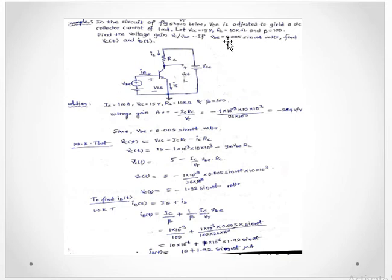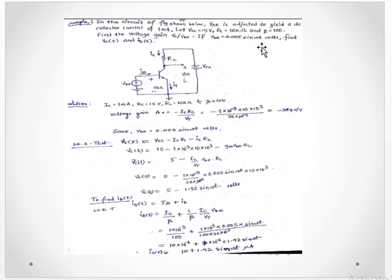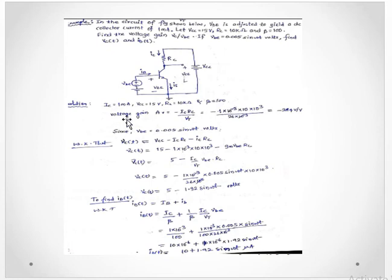A signal VBE = 0.005 sin(ωt) volts — a sine wave of amplitude 5 millivolts — is applied. Find VC(t) and IB, the base current and collector voltage. Given data: IC = 1 milliampere, VCC = 15 volt, RL = 10 kilo ohm, and beta = 100.